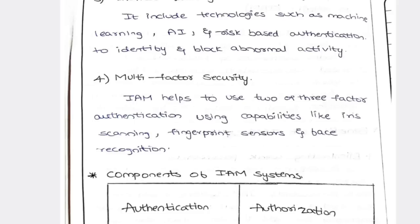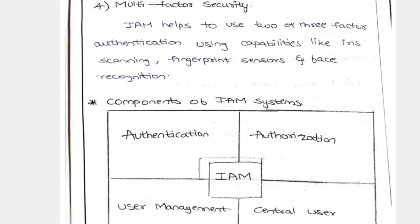Last is multi-factor security. Multi-factor security involves fingerprint scanner, face recognition, and whatever we use as a password or authentication method. This is the IAM best method.